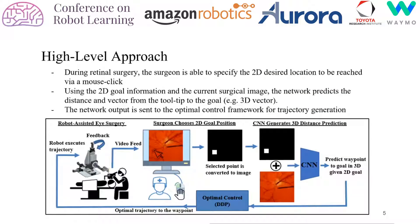Here we describe the high-level approach of our system. During retinal surgery, the surgeon is able to specify the 2D desired location to be reached via a mouse click. Using the 2D goal information and the current surgical image, the network predicts the distance and vector from the tooltip to the goal. The network's output is sent to the optimal control framework for trajectory generation, which satisfies known kinematic constraints including the sclera constraint and the non-penetration constraint of the retinal surface, ensuring the safety of the surgery.